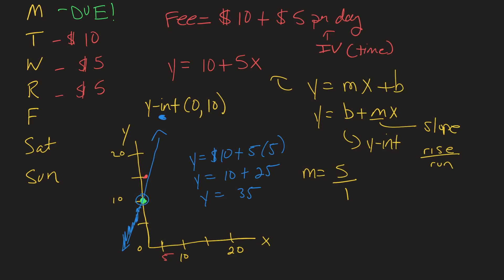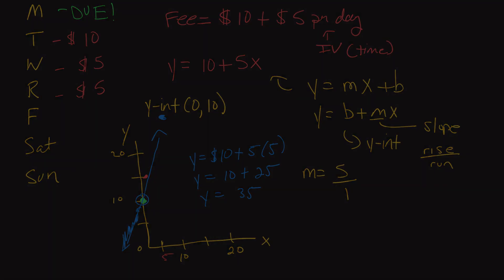And just to reiterate, the reason this is linear is that the slope is constant. The slope is the same. So anywhere on this line, the slope is five, because we're getting charged $5 per day. So per one unit of time, in this case it's days, $5.